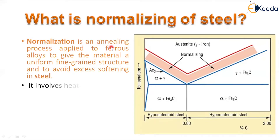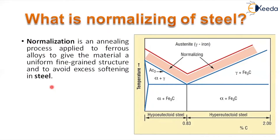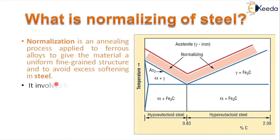Normalizing is essentially an annealing process applied to ferrous metals to give the material a uniform fine grain structure. Because of coarse grain structures that may form during annealing, we adapt normalization to get a fine grain structure and to avoid excess softening of the steel.